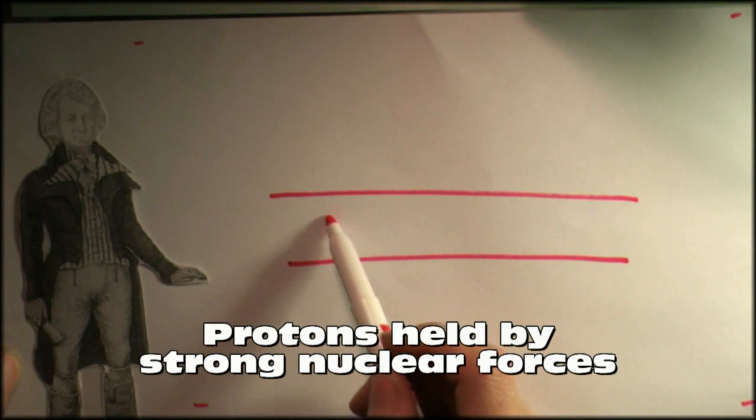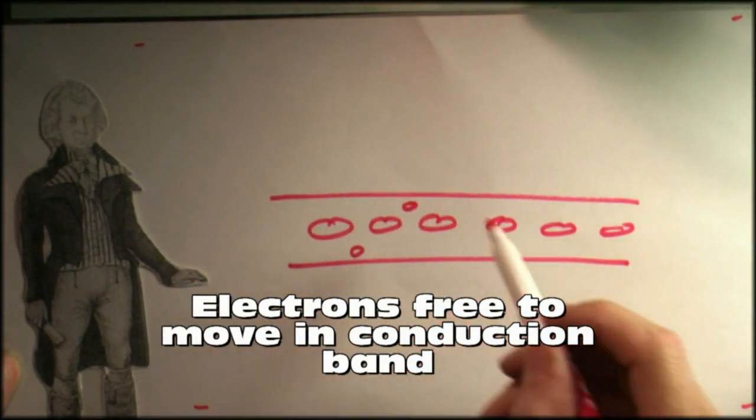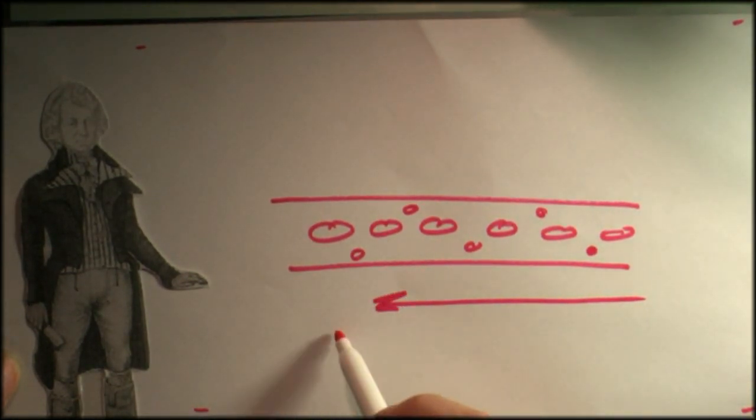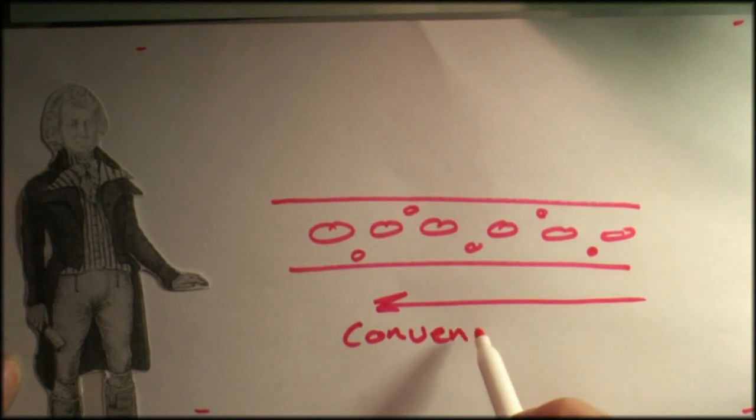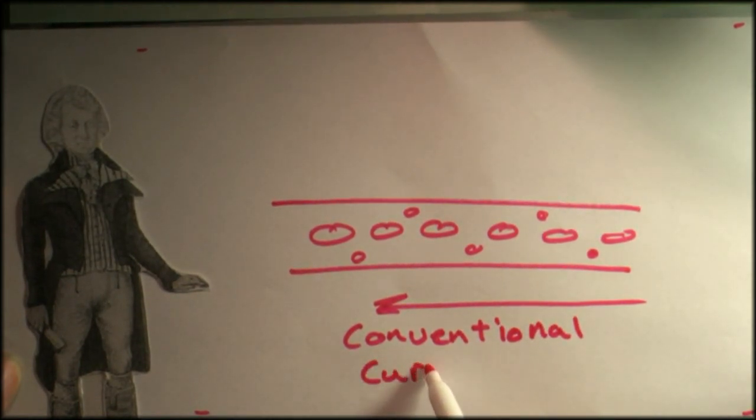Current is the flow of charge. It can be through wires, air, liquid, or even a vacuum. It wasn't entirely clear to the early pioneers of electronics what was actually flowing through wires, positive charge or negative charge. They made a guess that it was positive, and they didn't get it right.